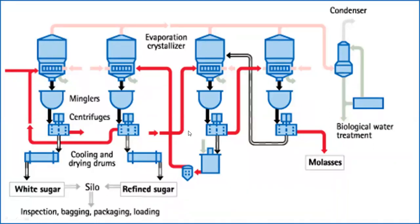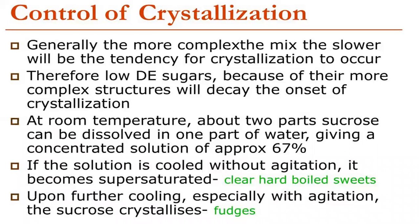The control of crystallization is generally complex. The more complex the structure, the slower the tendency for crystallization to occur, and the process can be delayed. For example, at room temperature about two parts sucrose can be dissolved in one part of water, giving a concentrated solution of approximately 67 percent. When the solution is cooled without agitation it becomes supersaturated, and upon further cooling especially with agitation, the sucrose crystallizes.